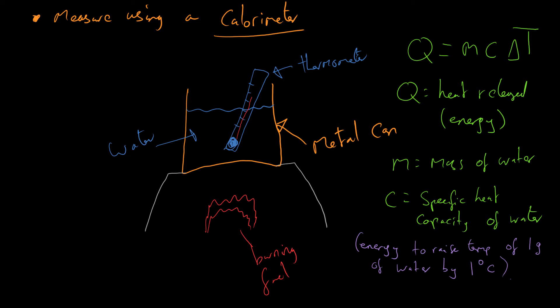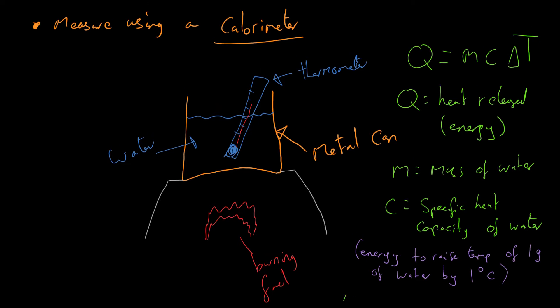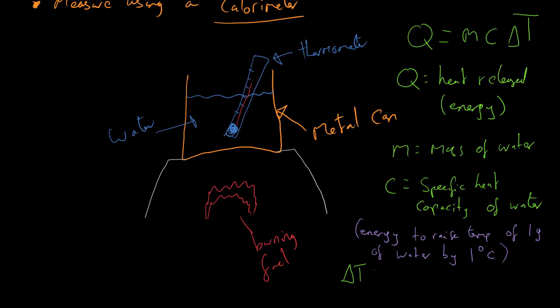Lastly, ΔT - delta T. The delta symbol, this triangle, just means 'change', and T stands for temperature, so delta T is the change in temperature.